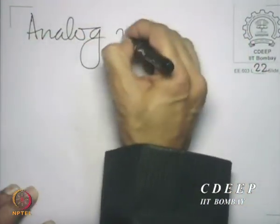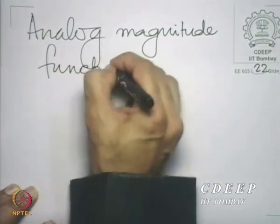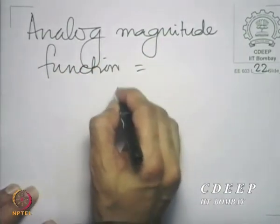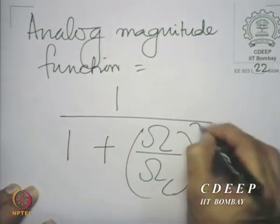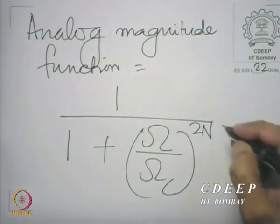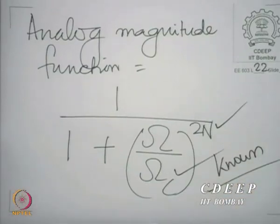Having chosen the half-power frequency, we then have the complete analog system function — more precisely, the analog magnitude function — which is 1 divided by [1 + (omega / omega_c)^(2n)]. With n and omega_c both known, the complete analog magnitude function is known.